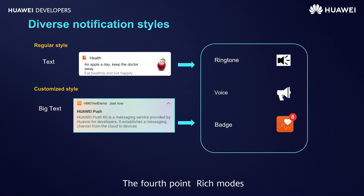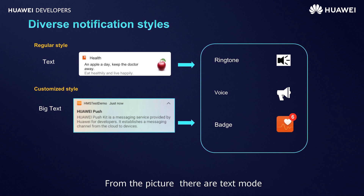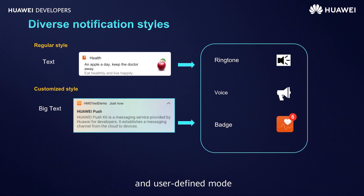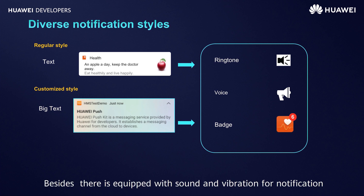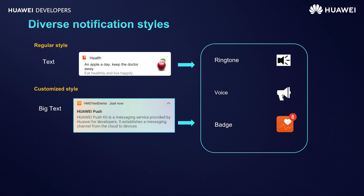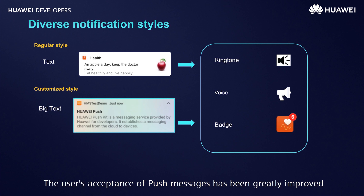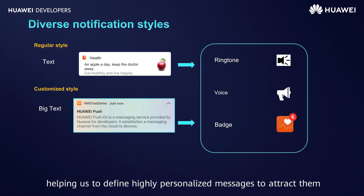The fourth point: Rich Modes. Many modes are available in Huawei Push — text mode, graphics context mode, logitext mode, and a user-defined mode. Besides, it is equipped with sound and vibration for notifications. The user's acceptance of push messages has been greatly improved, helping us define highly personalized messages to attract them.